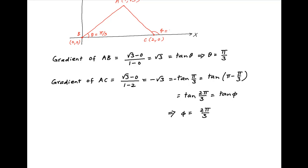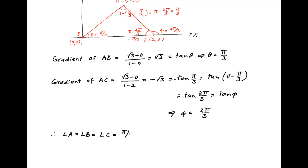Going back to triangle ABC, angle B = π/3. Since angle φ = 2π/3, angle C = π − 2π/3 = π/3. Since the sum of angles of a triangle equals π, angle A = π − (π/3 + π/3) = π/3. Therefore angle A = angle B = angle C = π/3, and triangle ABC is equilateral.